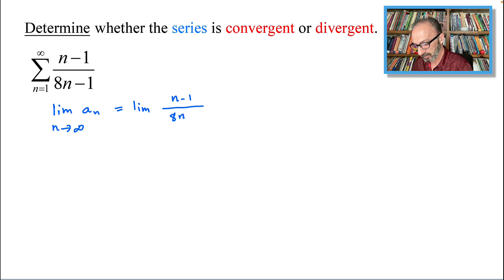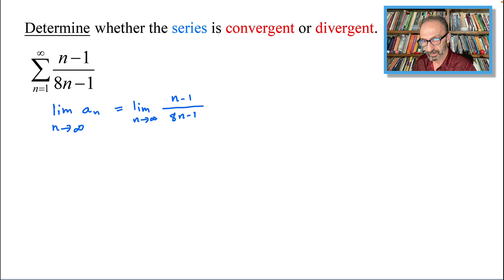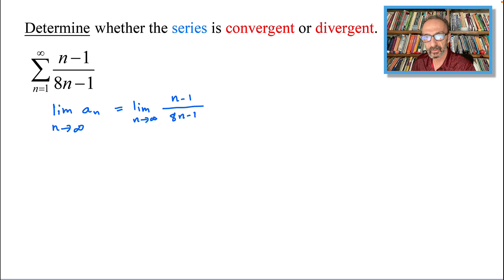...8n minus 1 as n approaches infinity. We could do this in different ways. Notice that we have the same degree if you look at it as functions, and the leading coefficient is 1 on top and the leading coefficient is 8 on the bottom, with the same degrees — first degree and first degree — so the limit will end up being 1 over 8.